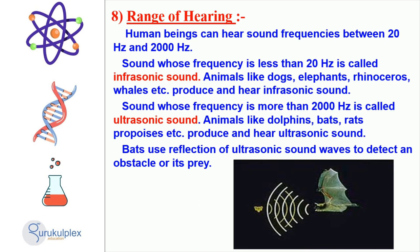Above 20000 Hz, sound is classified as ultrasonic, and animals like dolphins, bats, and porpoises can both create and detect it. Bats are particularly adept at using the reflection of ultrasonic sound waves to detect obstacles or prey.